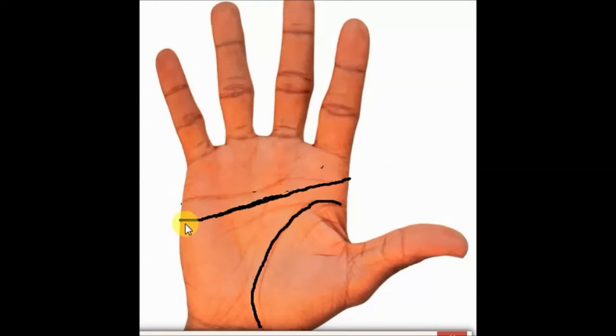It starts from the Mars mount and ends at the Mars mount. The Martian feeling is associated with this line, and Mars is already considered to be the most intense planet in palmistry.